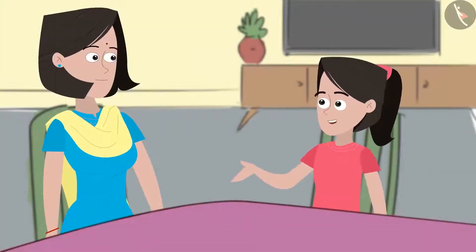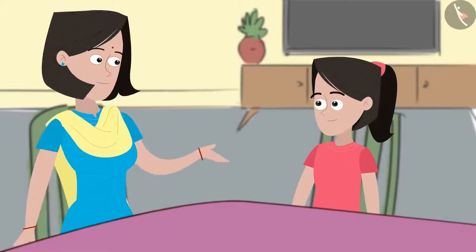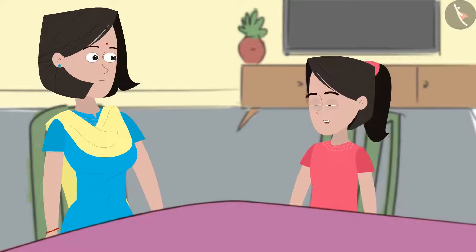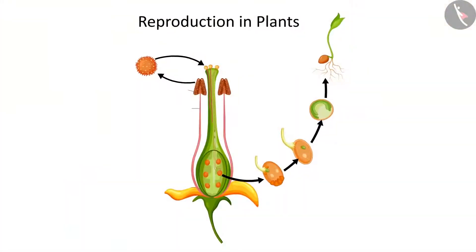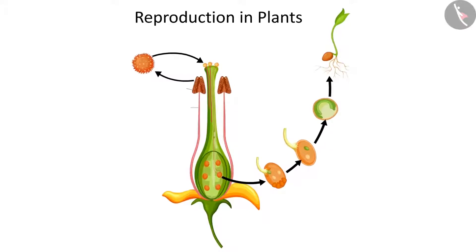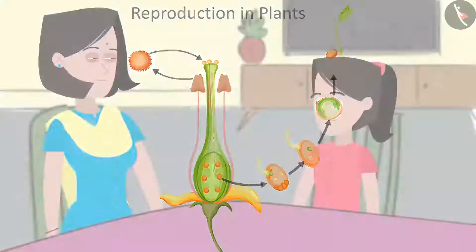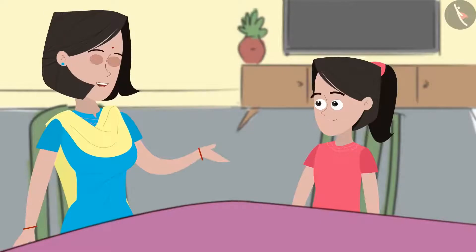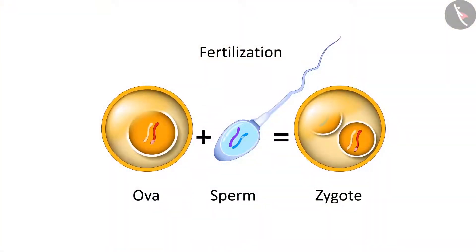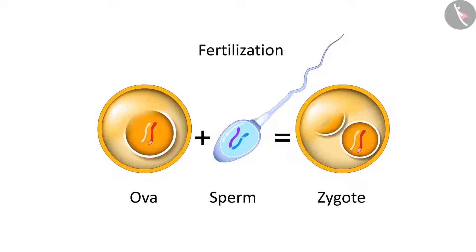Mummy, gametes are the reproductive cells, right? Yes, Sania. You had learned about sexual reproduction in plants in class 7. Can you recall that process? Yes, Mummy. In plants, male and female gametes fuse to form a zygote. The zygote then develops into an embryo that grows into a plant. Very good, Sania. In animals, the same process of fertilisation occurs when a female gamete or the ova fuses with the male gamete or the sperm.